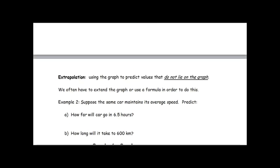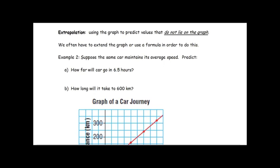We'll look at an example that looks at extrapolation. So extrapolation is using the graph to predict values that do not lie on the graph, so that are outside of the data that we're given. To do this we often have to extend the graph or use a formula in order to do this.